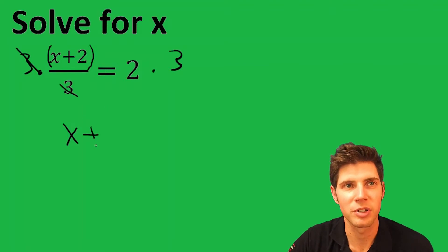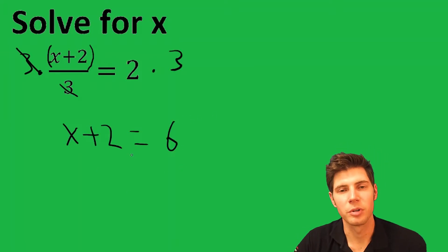So you're left with x plus 2 on the left. And on the right, 2 times 3 is 6. Now we have x plus 2 equals 6.